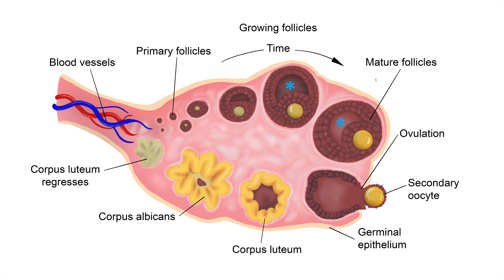Only one of these follicles will mature to the point of ovulation, as pictured in the cartoon. The corpus luteum pictured here is a yellow lobulated, serpiginous structure with a cystic center and has luteinized granulosa and theca cells. When the corpus luteum undergoes involution, it regresses and is then known as a corpus albicans.